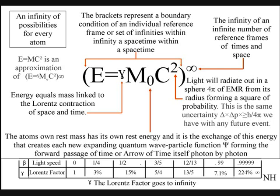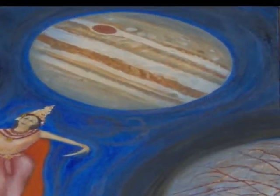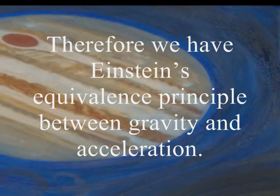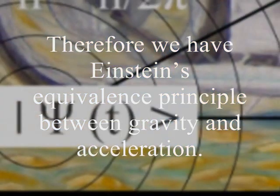Light radiating out in all directions at a constant speed, forming a sphere of electromagnetic radiation from its radius, forming a square of probability. Objects just freefall towards the center of the sphere because it has the slowest rate that time flows, and therefore the greatest energy or mass.